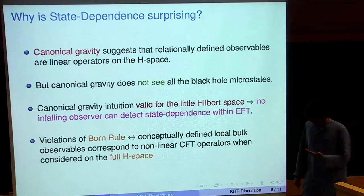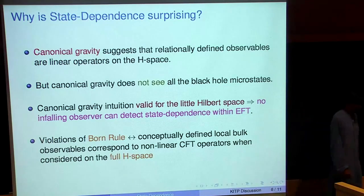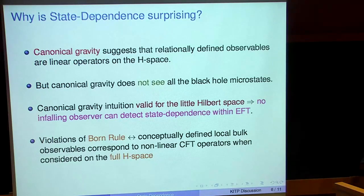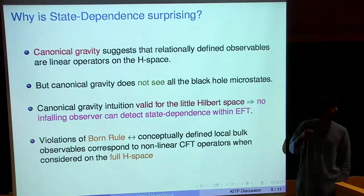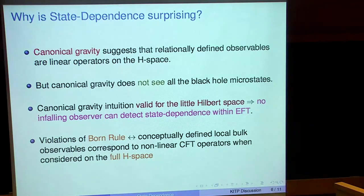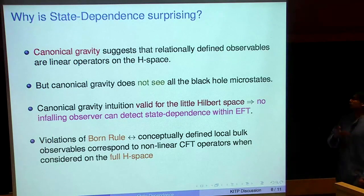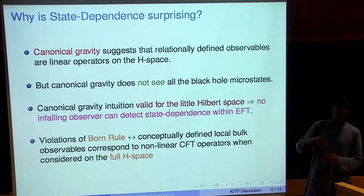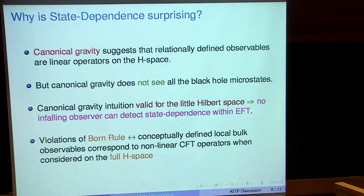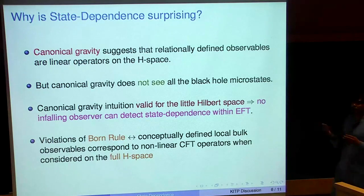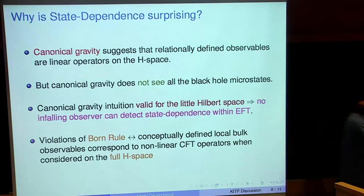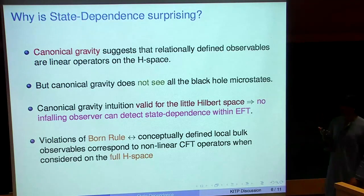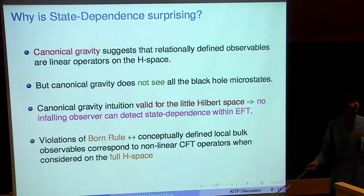What's the broader significance of the fact that things are state dependent — these violations of the Born rule that many of us have discussed? Conceptually, if you try and ask for the observable in the CFT corresponding to a well-defined bulk operator — like the metric operator at some point behind the horizon — the answer is given by something that's a non-linear CFT operator when examined on the full Hilbert space. This is not the statement that you're adding non-linear terms to the Schrödinger equation, but rather that answering a well-defined gauge invariant bulk question at all points in the CFT Hilbert space requires a non-linear CFT operator.